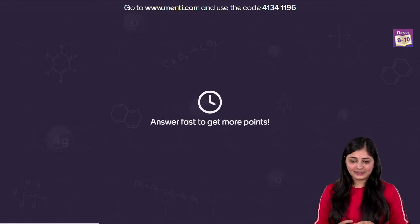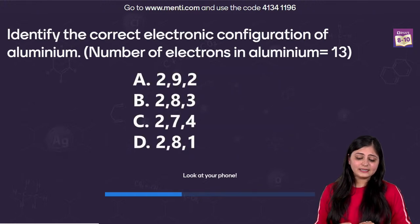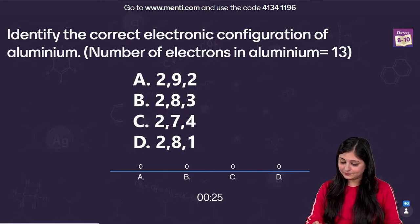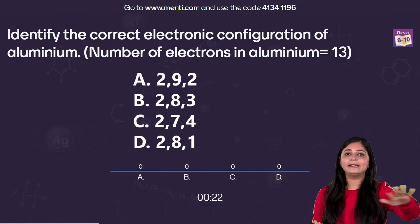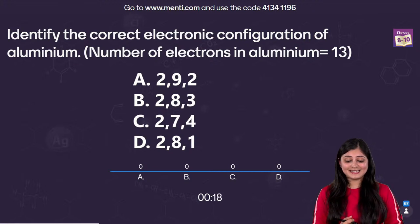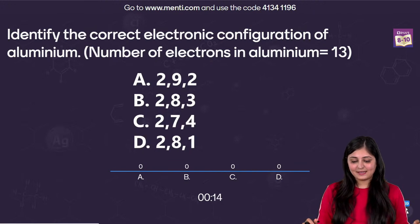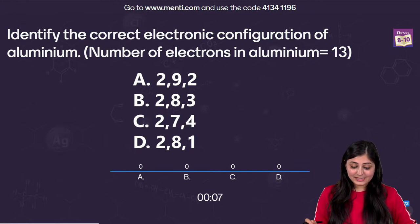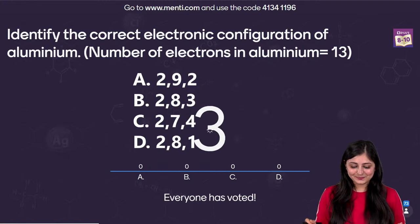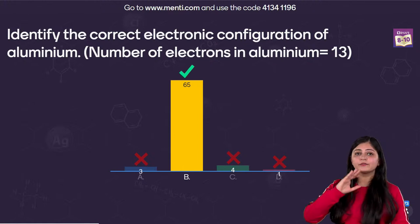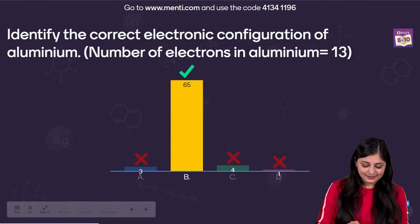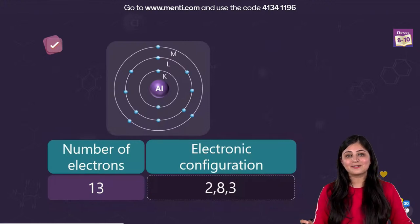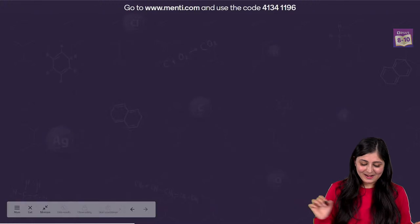Question number 3: identify the correct electronic configuration of aluminium — and they've also given you that aluminium has 13 electrons. This question should be answered at lightning speed since they've given you the number of electrons. Most of you landed on the correct answer, which is option B: with 13 electrons the electronic configuration is 2, 8, 3.